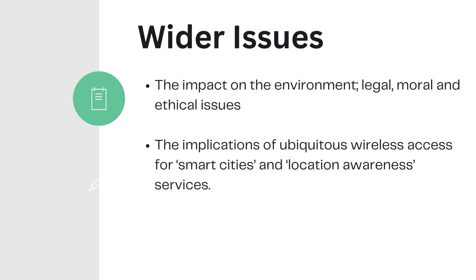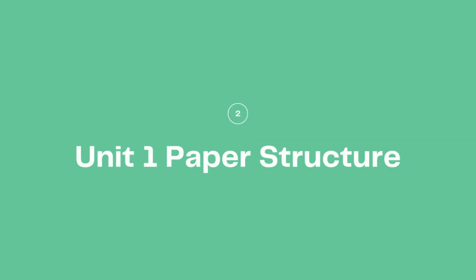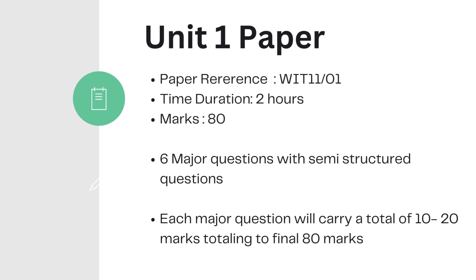Those are the six main topics you need to learn for your IAS IT Unit 1 paper. Next we will see the paper structure in recent years. When registering for your exam, make sure your subject code is WIT11-01. The time duration for the Unit 1 paper is two hours. There are six major questions with semi-structured questions, and the total mark for the paper is 80 marks. I'll be doing paper discussion videos later, so subscribe to the channel and click the bell icon to get notifications when I upload new lessons and paper discussion videos. Good luck!